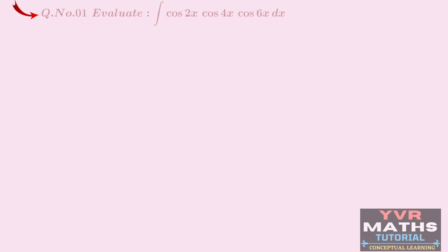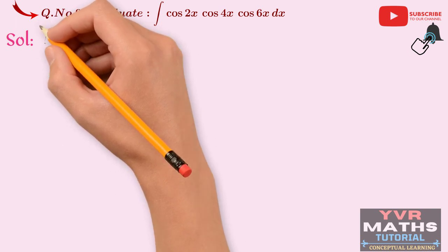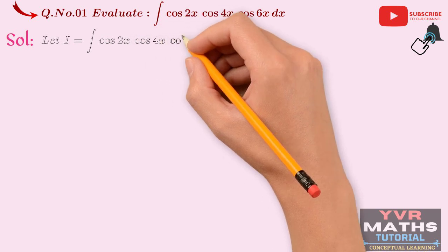Question number 1: Evaluate integral cos(2x)·cos(4x)·cos(6x) dx. In the previous video, we learned problems where the integrand is a product of two trigonometric functions. In this video, the integrand has a product of three trigonometric functions. Let us discuss the solution. We will consider the given integral as capital I, so let I = integral cos(2x)·cos(4x)·cos(6x) dx.